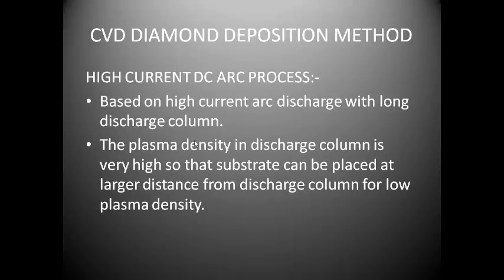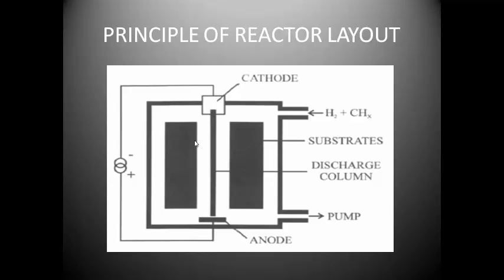The CVD diamond deposition method uses the high current DC arc process. The plasma density in the discharge column is very high, so the substrate can be placed at a larger distance from the discharge column for lower plasma density. The plasma density can be changed by changing the position of the substrate. If we put the substrate farther away, then the plasma density will reduce and the CVD process will slow down and the thickness of the deposition will decrease.